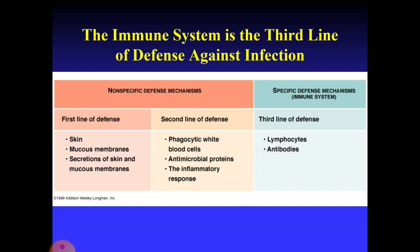The defense mechanisms of an individual can be classified into two types: non-specific defense mechanism and specific defense mechanism. Non-specific defense mechanism is classified into first line and second line defense. The first line of defense comprises skin and mucous membranes and their secretions, while the second line includes phagocytic white blood cells, antimicrobial proteins, and inflammatory response. The specific defense mechanism, the third line of defense, involves lymphocytes and antibodies.